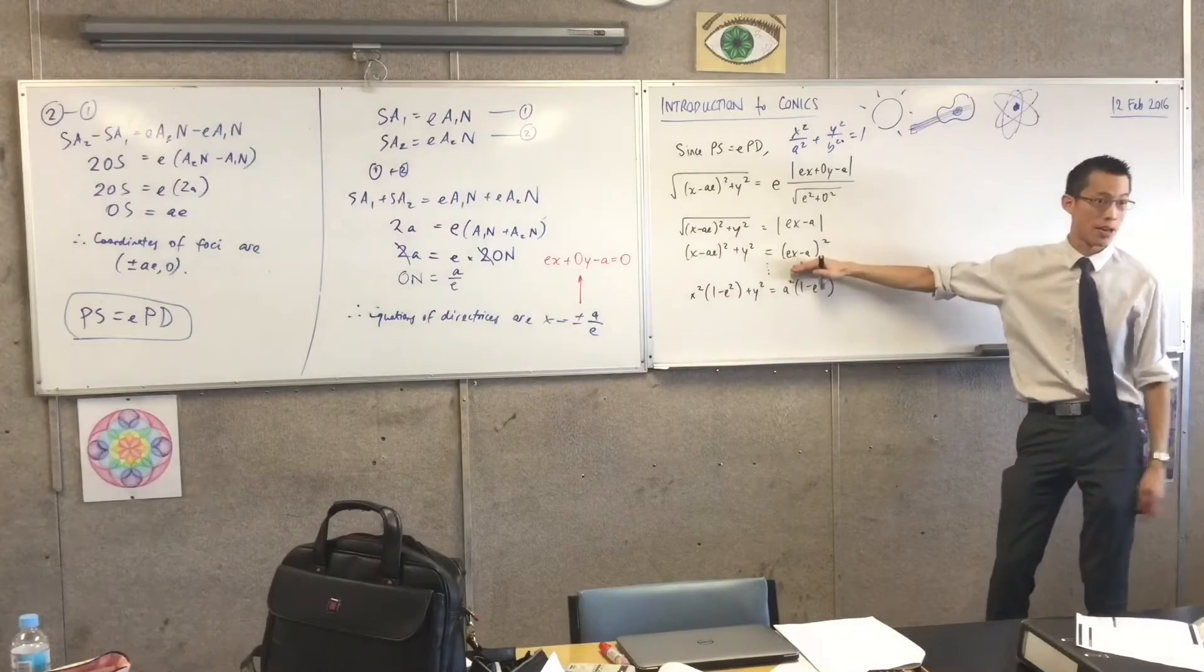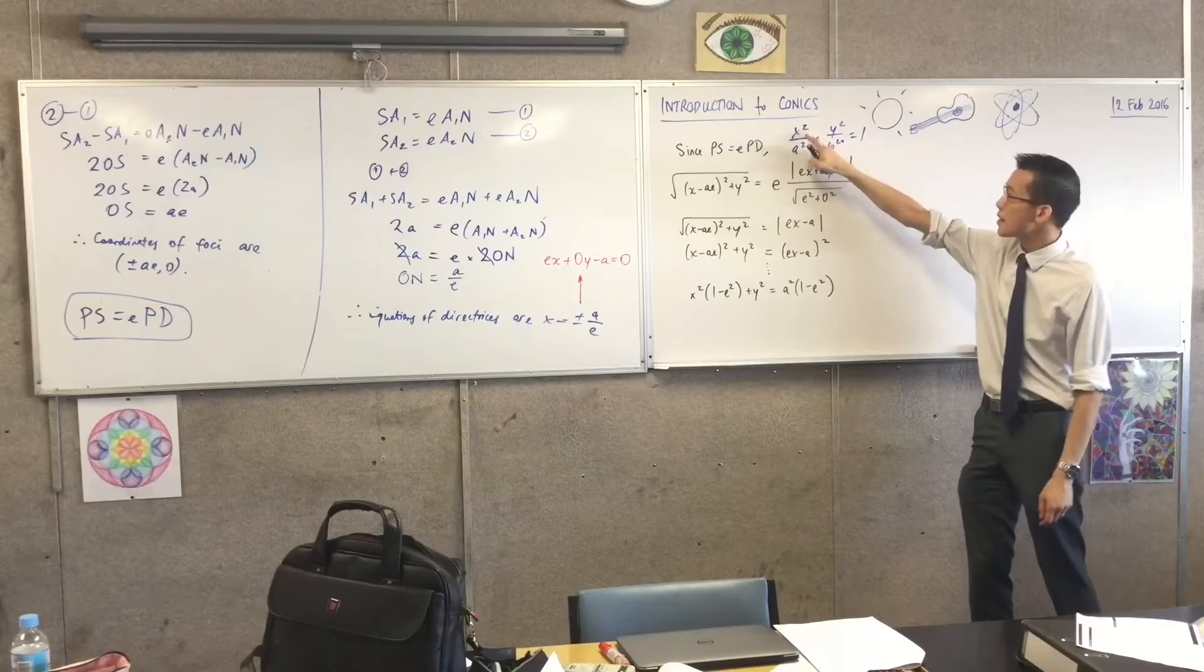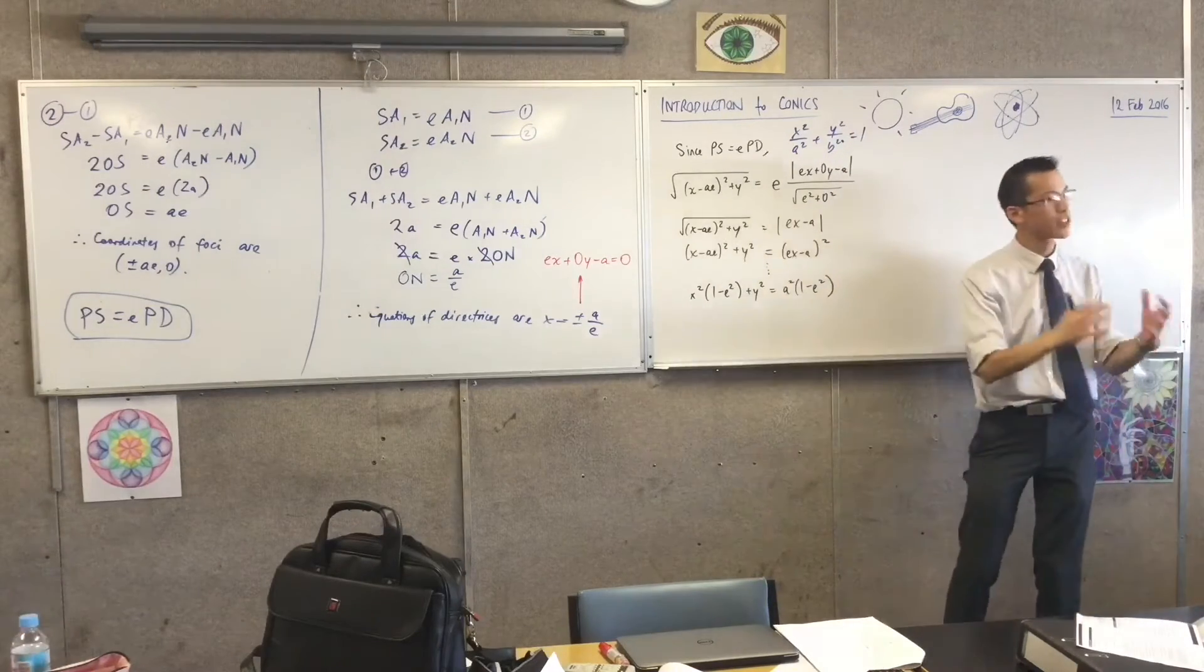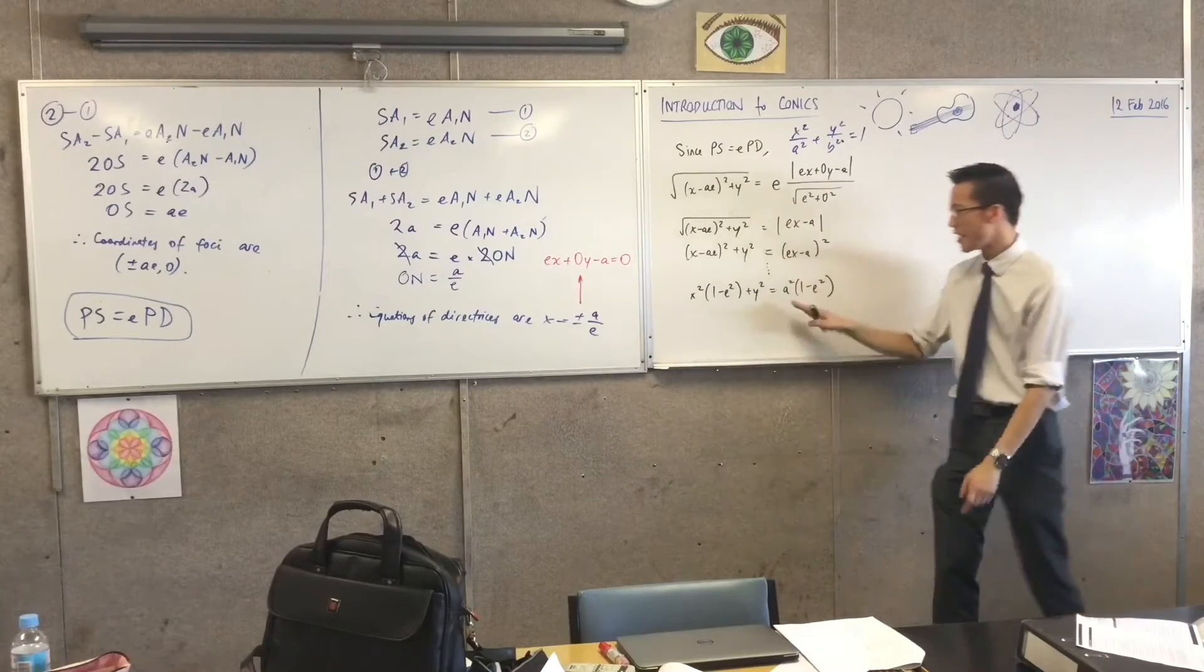The important thing is, have a look at what I've got here. How did I know to get to this out of my like terms? The reason why is because I'm aiming at this. I'm aiming at an x squared and a y squared separated out.